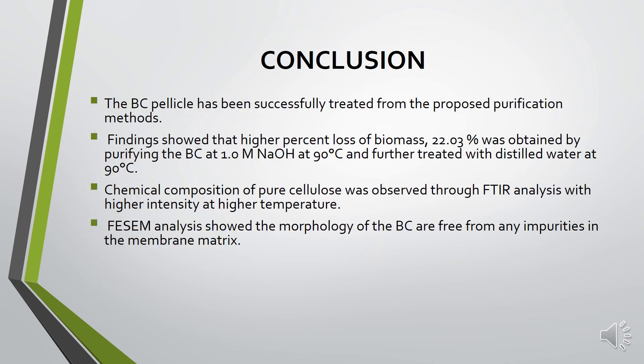For the conclusion, the BC pellicle has been successfully treated using all the proposed purification methods. The highest percentage of loss of biomass — 22.03% — was obtained by purifying the BC at 1 molar sodium hydroxide at 90 degrees C, followed by further treatment with distilled water at 90 degrees C. FTIR analysis confirmed the chemical composition of pure cellulose with higher intensity at higher temperature. FESEM analysis shows that the morphology of BC is free from any impurities in the membrane matrix. Thank you.